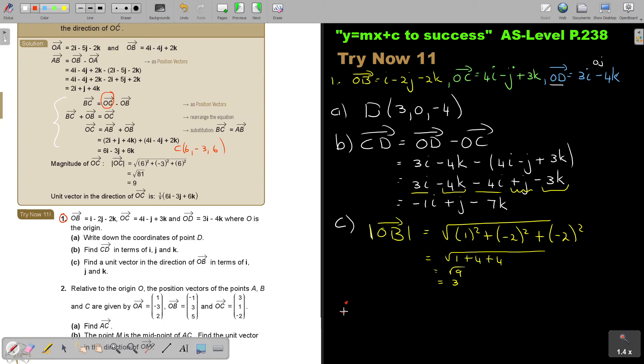Therefore, a unit vector in the direction of OB is 1 over 3 times OB, which is a third times i minus 2j minus 2k.